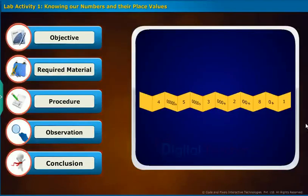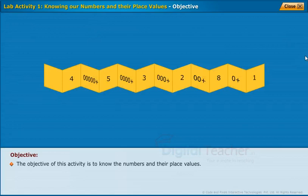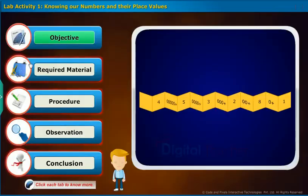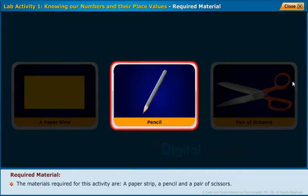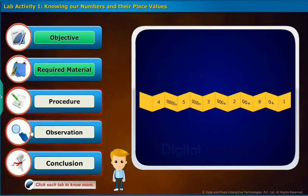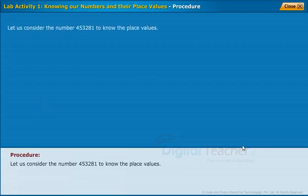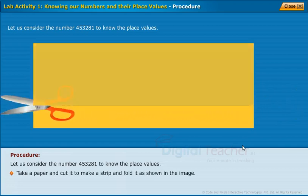Let us do a lab activity to know the numbers and their place values. Click each tab to know more. The objective of this activity is to know the numbers and their place values. The materials required for this activity are a paper strip, a pencil, and a pair of scissors. Let us consider the number 4, 5, 3, 2, 8, 1. To know the place values, take a paper and cut it to make a strip and fold it as shown in the image.